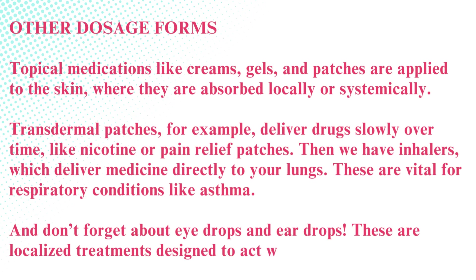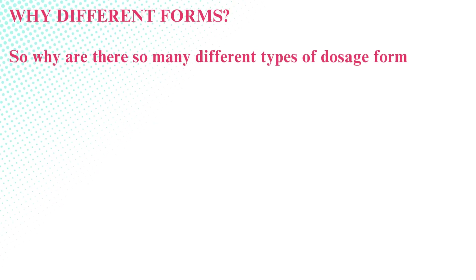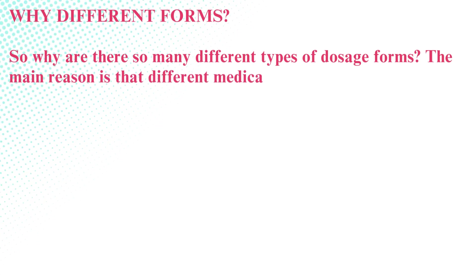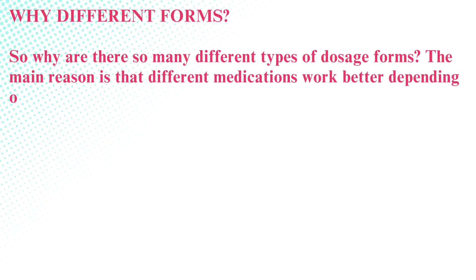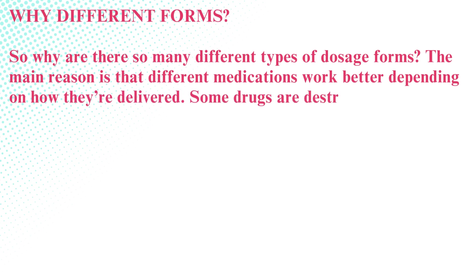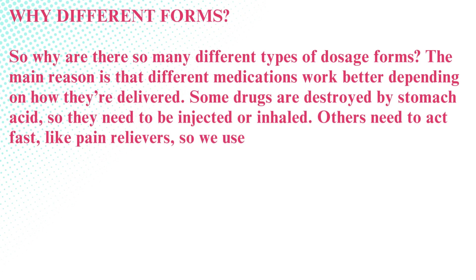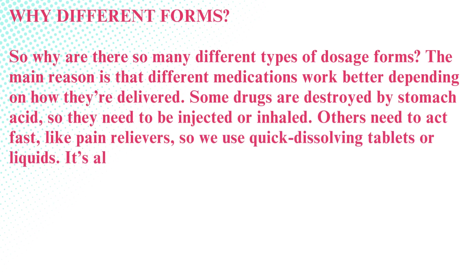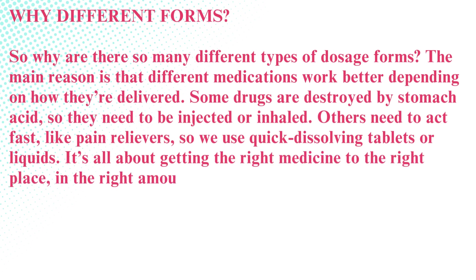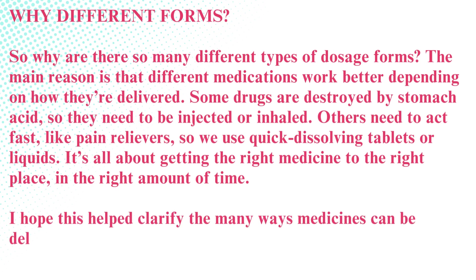Why are there so many different types of dosage forms? The main reason is that different medications work better depending on how they're delivered. Some drugs are destroyed by stomach acid, so they need to be injected or inhaled. Others need to act fast, like pain relievers, so we use quick-dissolving tablets or liquids. It's all about getting the right medicine to the right place, in the right amount of time. I hope this helped clarify the many ways medicines can be delivered to our bodies.